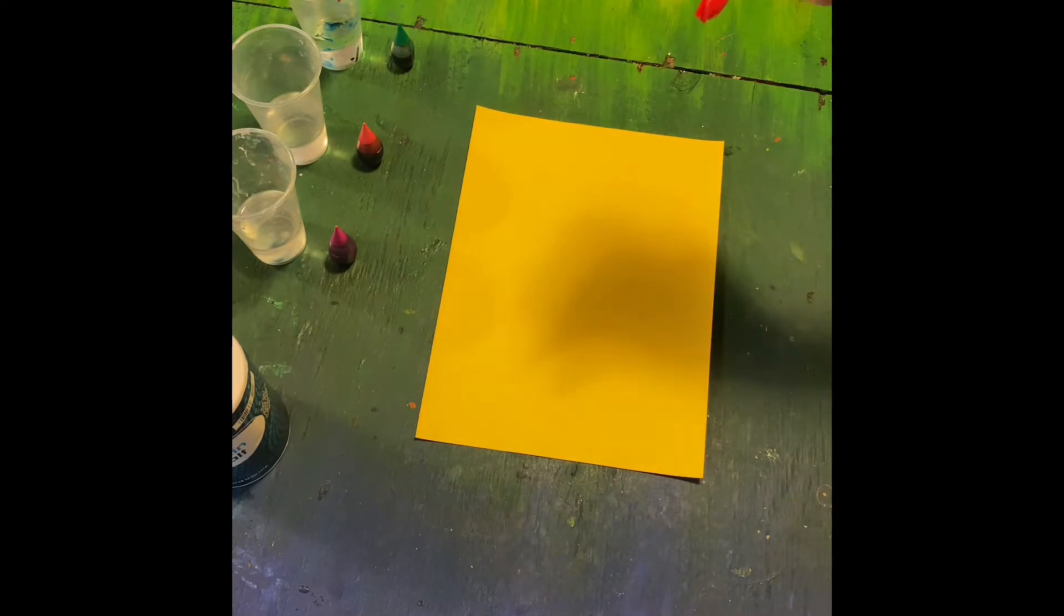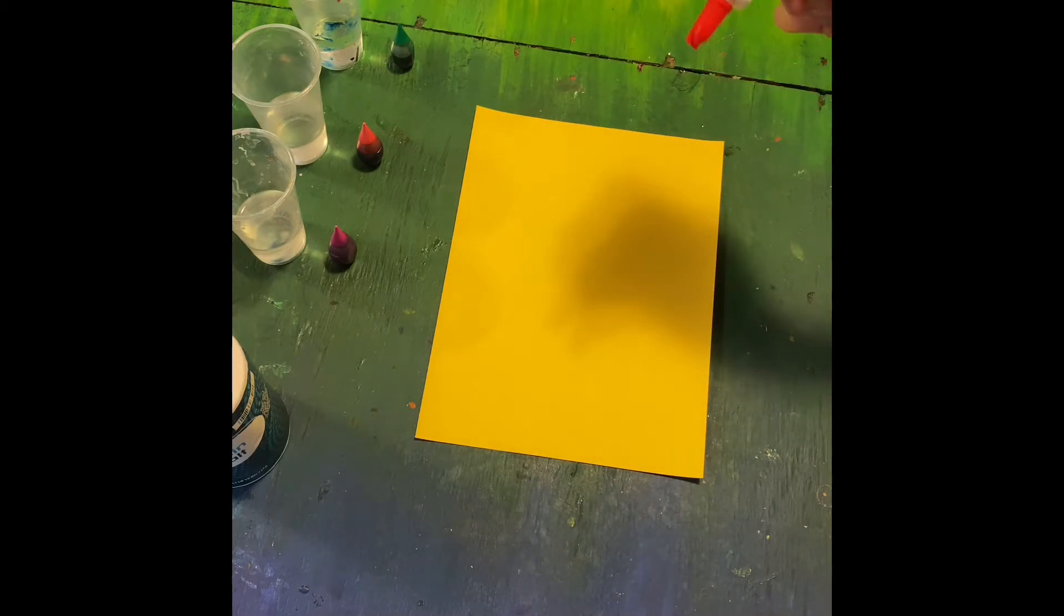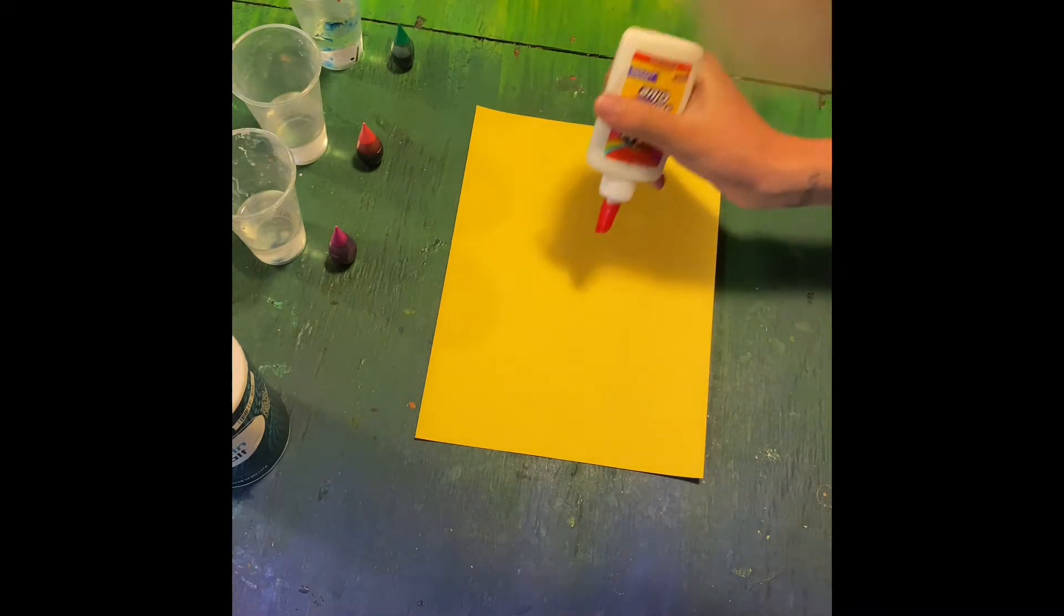Alright, so to get started you're going to have your materials all laid out nice and neatly for you so you know exactly what you need. For this project you're going to have your paper down flat and you're going to take your glue and you're going to make any design that you want. So today I'm going to go with a sun but it doesn't have to be a sun.